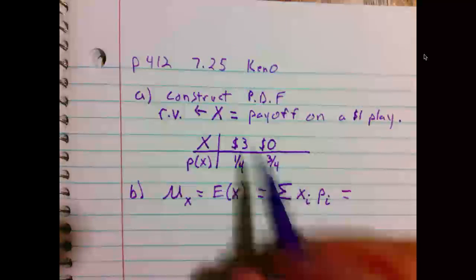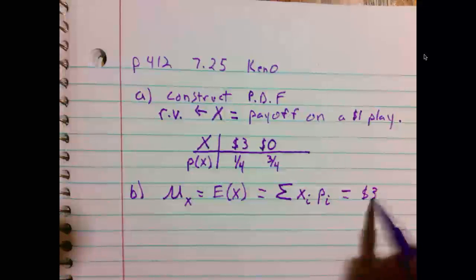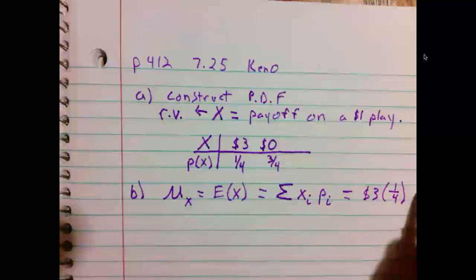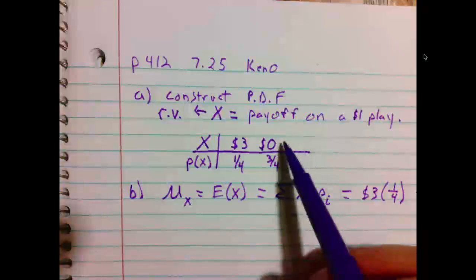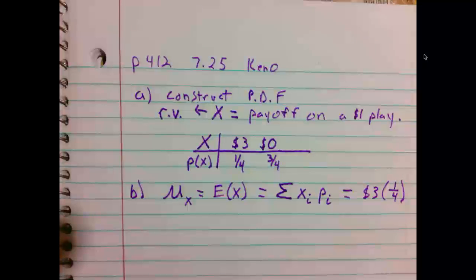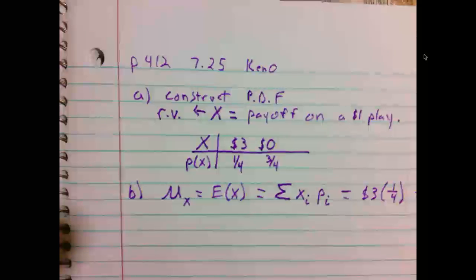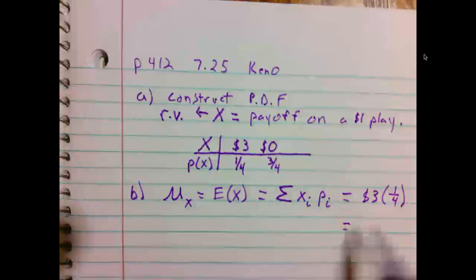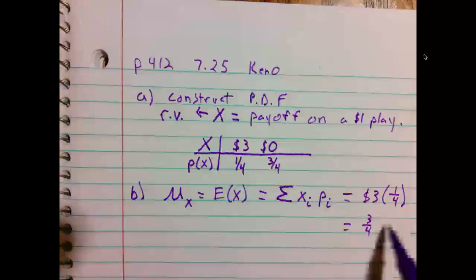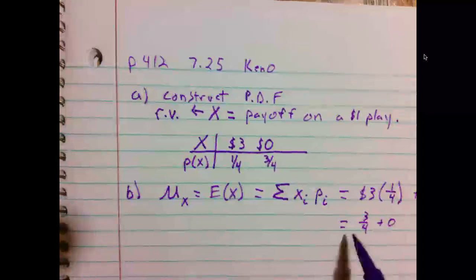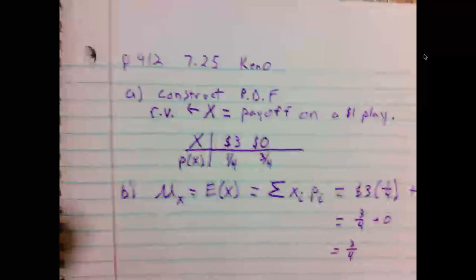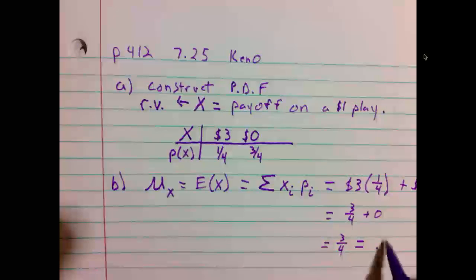So, in our case, our first X is 3, the probability of that is 1 fourth, plus second X is 0, times 3 fourths. Thus, 3 times 1 fourths is 3 fourths. 0 times 3 fourths, clearly 0. 3 fourths plus 0 is 3 fourths. In this case, we were talking about dollars. This is 3 fourths of a dollar, which is 75 cents.